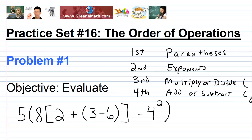We have our order of operations on screen, so we don't need the mnemonic for problem one. For the first problem, the objective is to evaluate: 5 times, then in parentheses, 8 times, inside brackets, 2 plus, then inside parentheses 3 minus 6, outside minus 4 squared, and minus 4 squared.